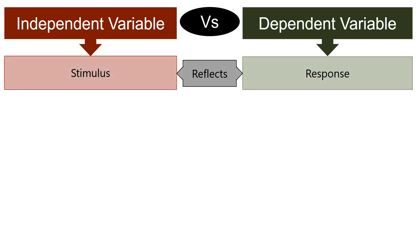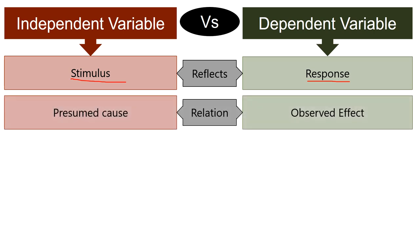An independent variable is the stimulus which causes the change in another variable. Conversely, the dependent variable reflects the response which shows the outcome or effect of something. When it comes to relationship, the independent variable is the presumed cause, while on the other hand the dependent variable is the observed effect.